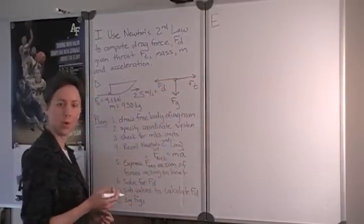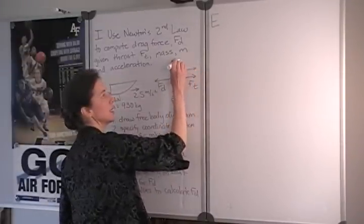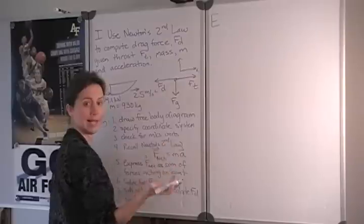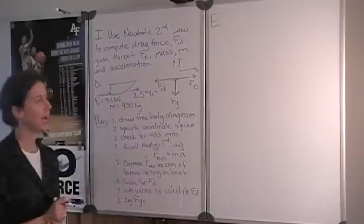Now we need to specify a coordinate system. I will choose the normal Euclidean system, where x will be the horizontal axis to the right, and y will be the vertical axis up, with the positive direction up.